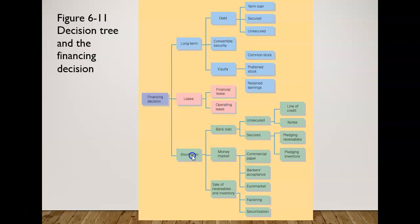For short-term financing, options include bank loans, money market instruments, or sales of receivables and inventory. Bank loans may be unsecured (lines of credit or notes) or secured (pledging of receivables or inventory). Money market options include commercial paper, bankers' acceptances, or Euromarket instruments. Sales of receivables/inventory options include factoring or securitization.